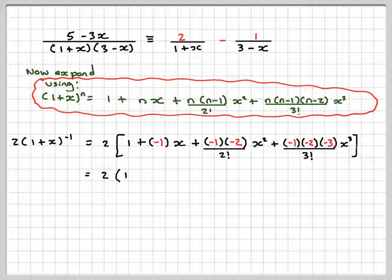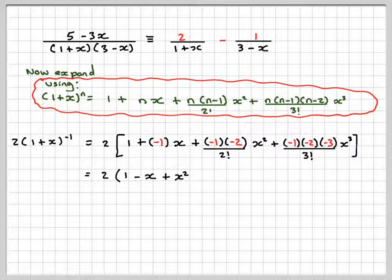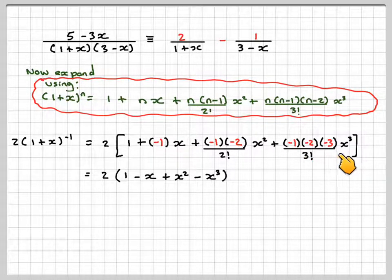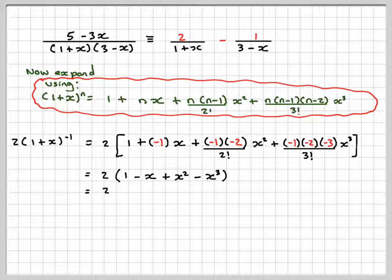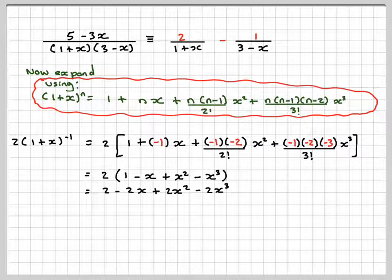Simplifying first, we've got 1 minus x plus x squared. We're going to have 2 over 2 and we're going to have 6 over 6 here minus x cubed. It will be minus because there's 3 minuses there. And then we're going to have that. That's 2 minus 2x plus 2x squared minus 2x cubed.